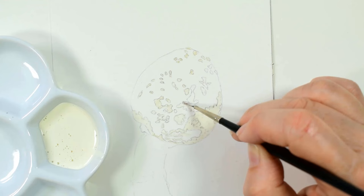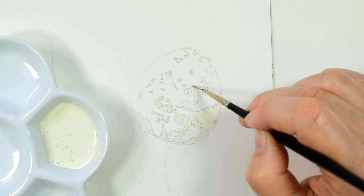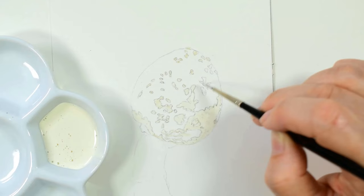Once I've finished covering all of the areas where my white scales will be, I let my masking fluid dry thoroughly, which only takes 10 to 20 minutes as long as you haven't put it on too thick.